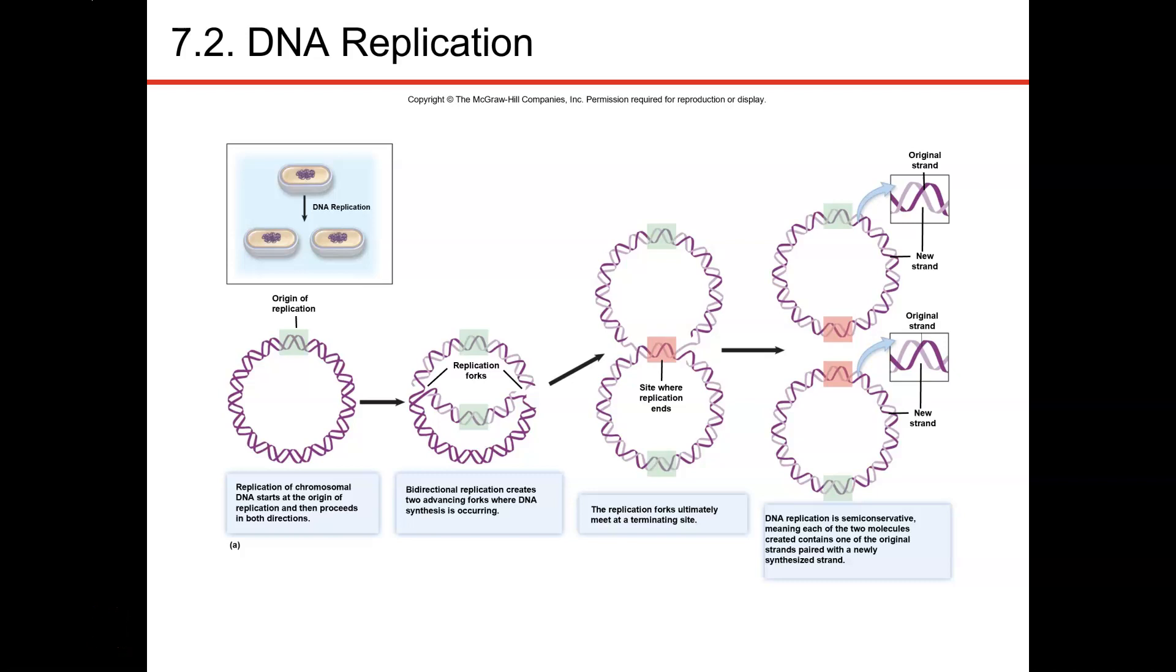In bacteria, since they have only one circular chromosome, DNA replication starts at a region on the chromosome known as the origin of replication, which you can see here. Replication then proceeds in both directions.